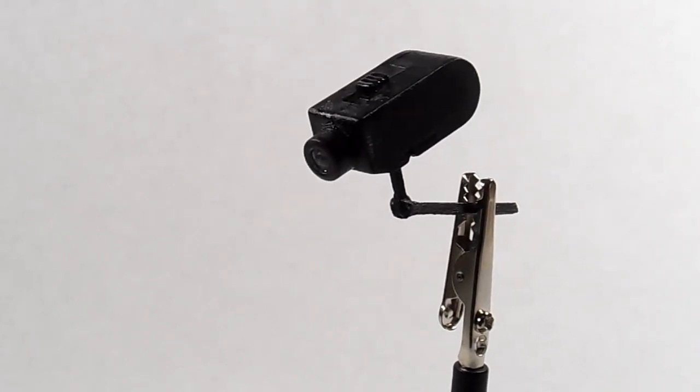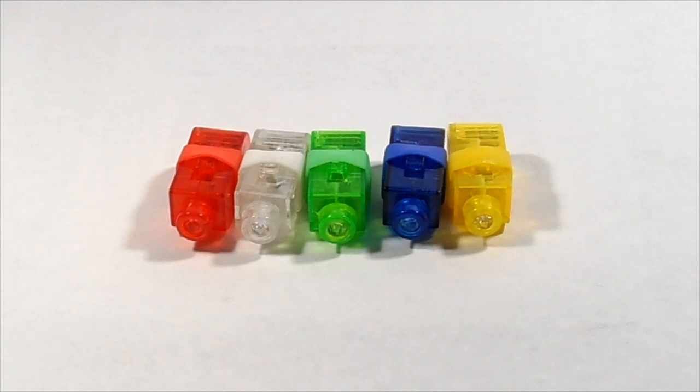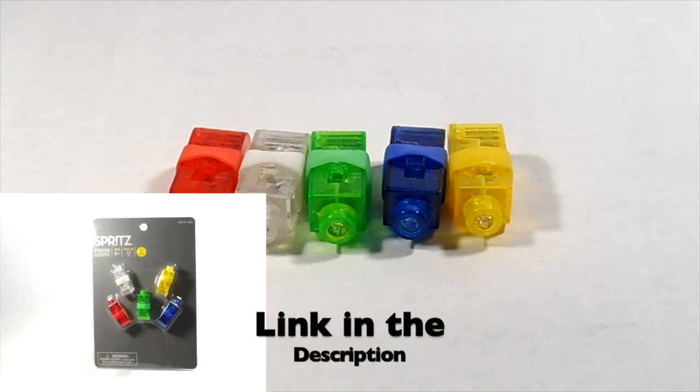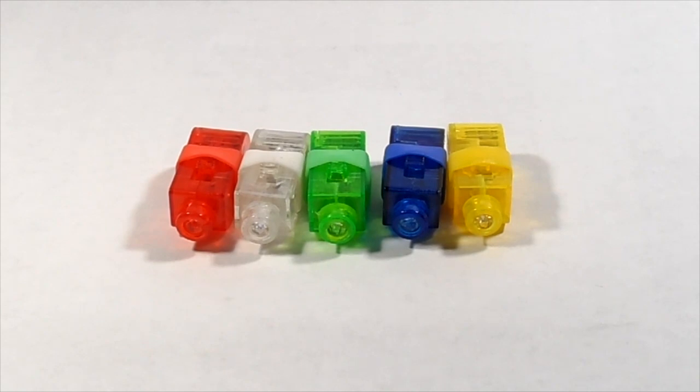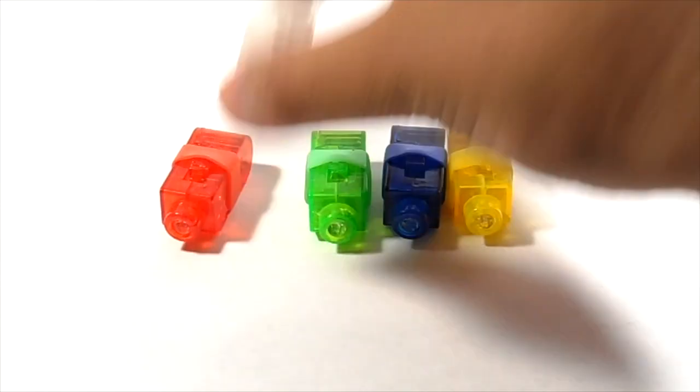So as always guys we're just going to get right into it. Alright so the first step is we're going to grab these finger lights. You can find these in many different stores. They're usually about a dollar or two dollars for a small pack. I know you can find them on Amazon, on eBay, other places like that online as well. But we're going to go ahead and just do one today. I'm going to take the white one because it's going to be easier to spray paint.